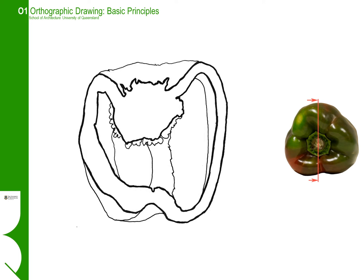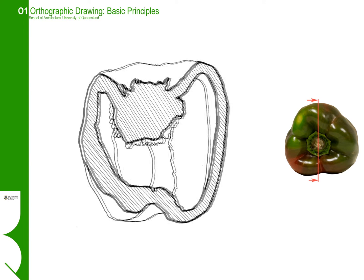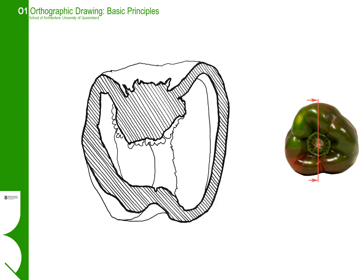Like the plan, we are trying to emphasise what has been cut, and we do this through thickening up the external lines of the cut. We can then enhance that further by putting a hatch across that.